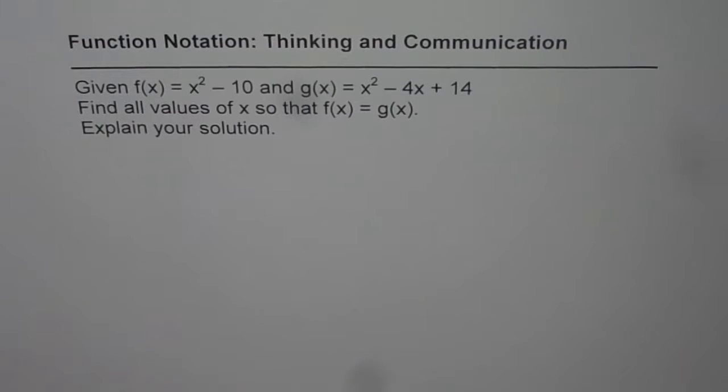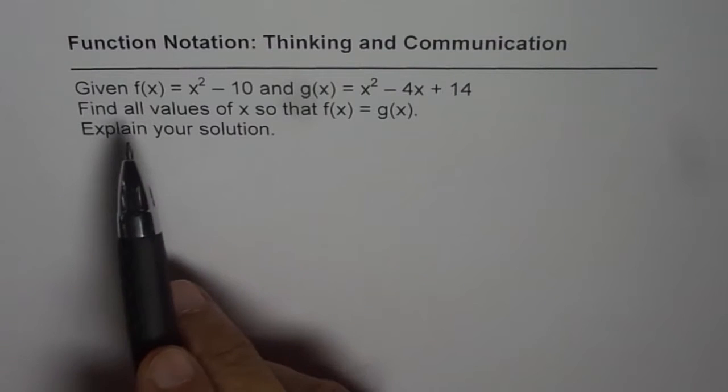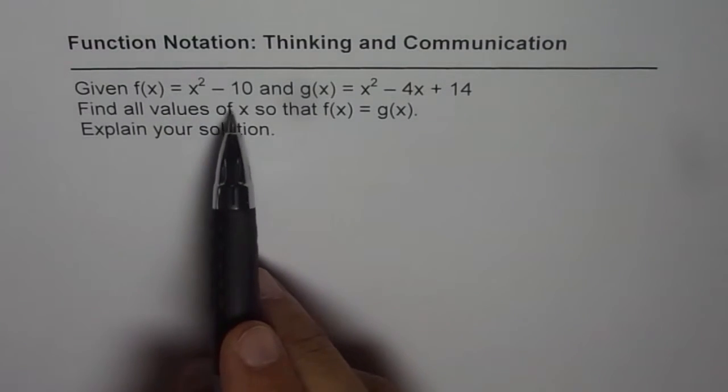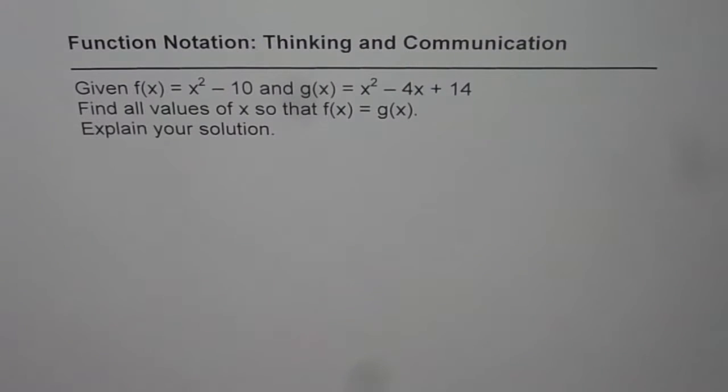Here is a thinking and communication question on function notation. Given f of x equals x square minus 10, and g of x equals x square minus 4x plus 14, find all values of x so that f of x equals g of x. Explain your answer.